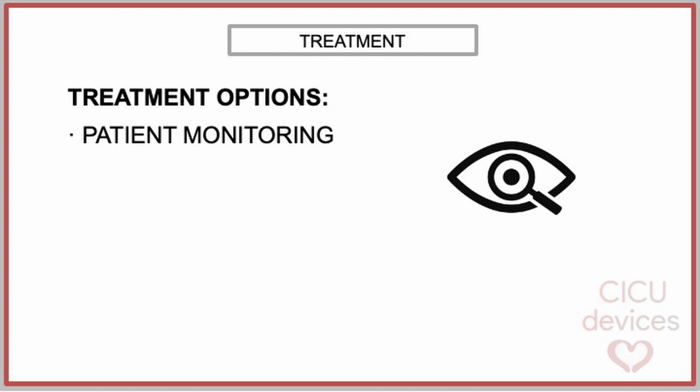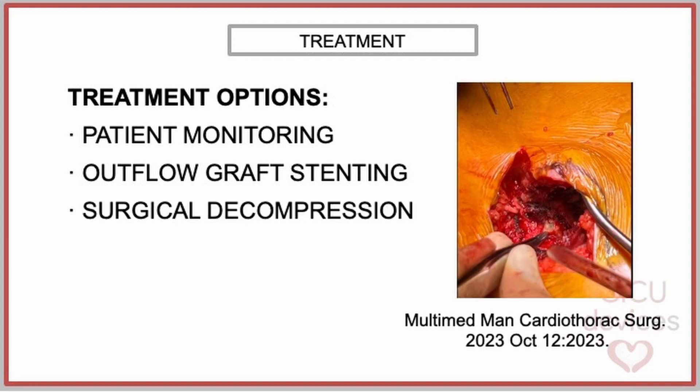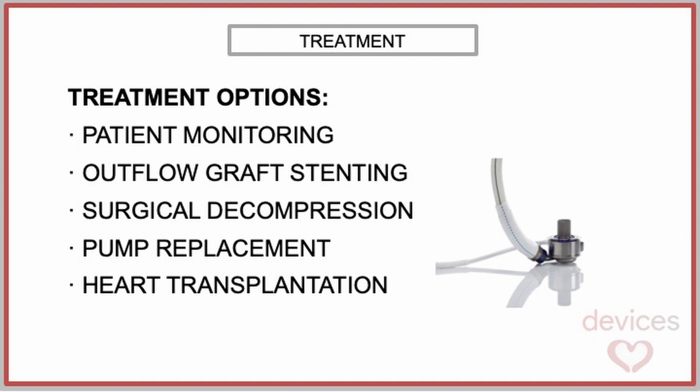The management options for this complication include a watchful waiting strategy, which can be chosen in case of an incidental finding without flow issues; percutaneous intervention with stenting of the outflow graft; surgical removal of the proteinaceous material, which can be performed through thoracotomy; and finally, in certain cases, pump replacement or heart transplantation may be necessary.